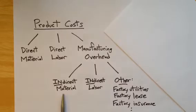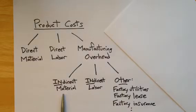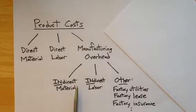What about the rags, the paper towels, and the cleaning solvents used in the factory? Those are materials being used in the factory but are not going directly into our products — those would also be included under indirect material.